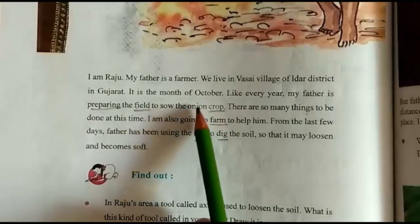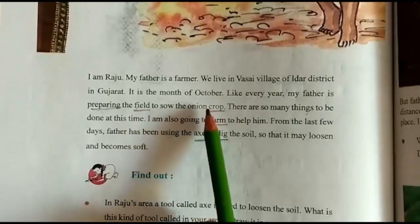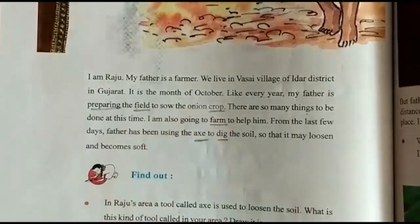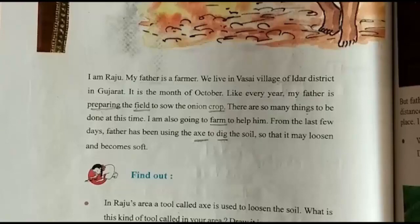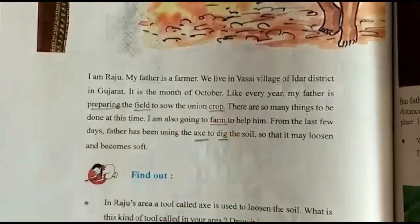His father is going to prepare the field for the onion crop. Preparing means we are going to make it ready. Field means maidan. Crop means fasal. There are so many things to be done at this time.